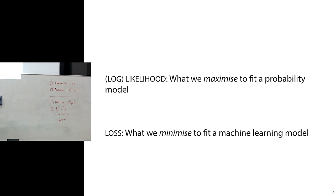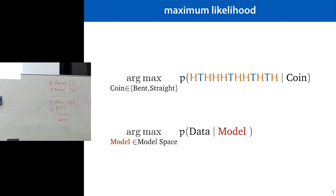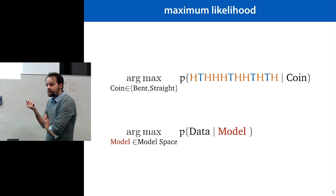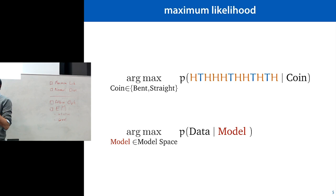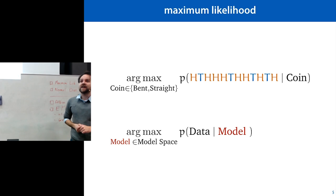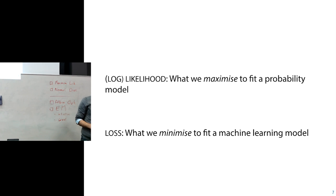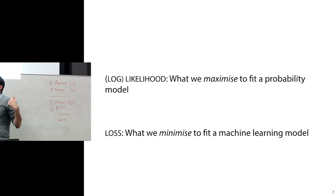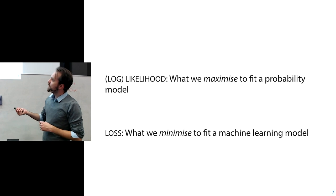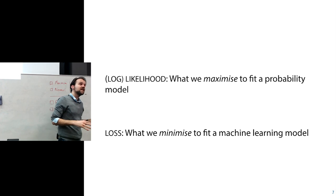Usually what we do instead of taking the likelihood is take the log likelihood — we put a logarithm in front of it. The maximum doesn't change, and probability density functions are much easier to evaluate in log space. This is a lot like what we've been doing in machine learning: we've been stating a loss function and minimizing it. Log likelihood fitting is very similar — we take this log likelihood as an optimization function to maximize, and if we put a minus in front we can minimize it, making it broadly the same as a loss function.